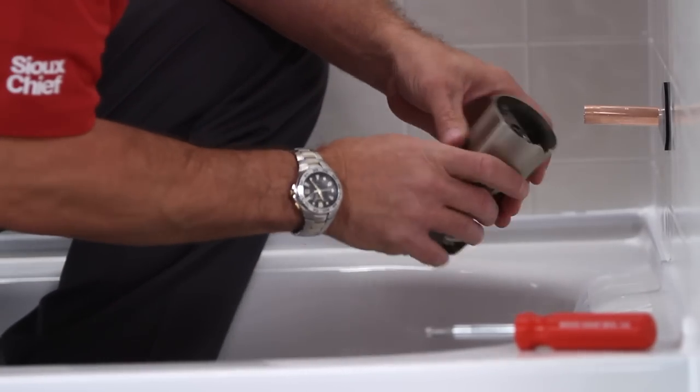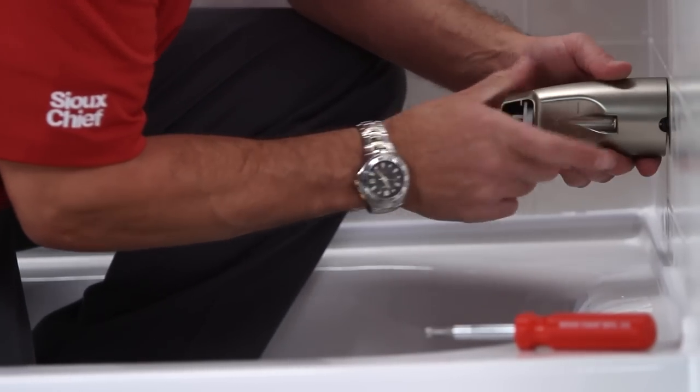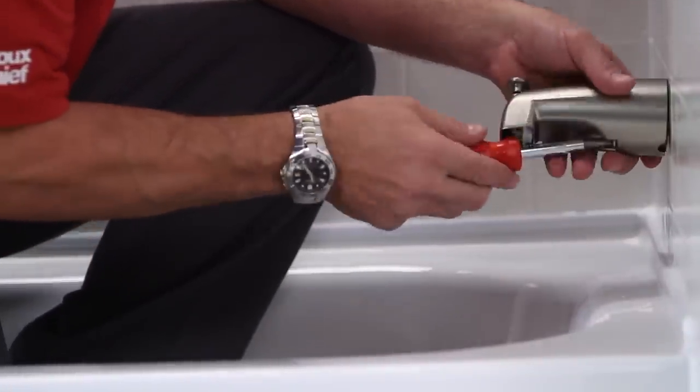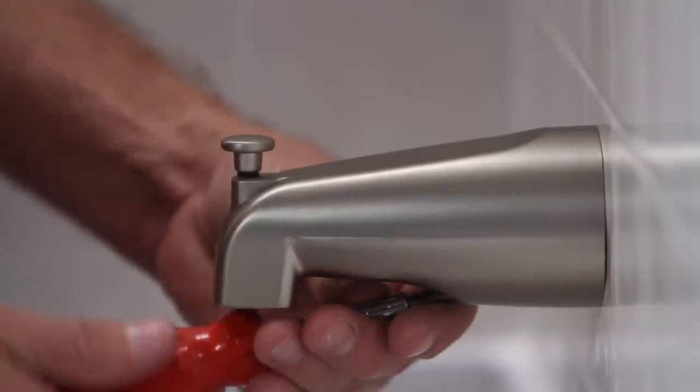Install the SmartSpout over the copper tube and push it against the wall. Using the number two Phillips screwdriver, turn the screw clockwise to engage the internal clamp, allowing the SmartSpout to pull itself toward the wall until it is snug.